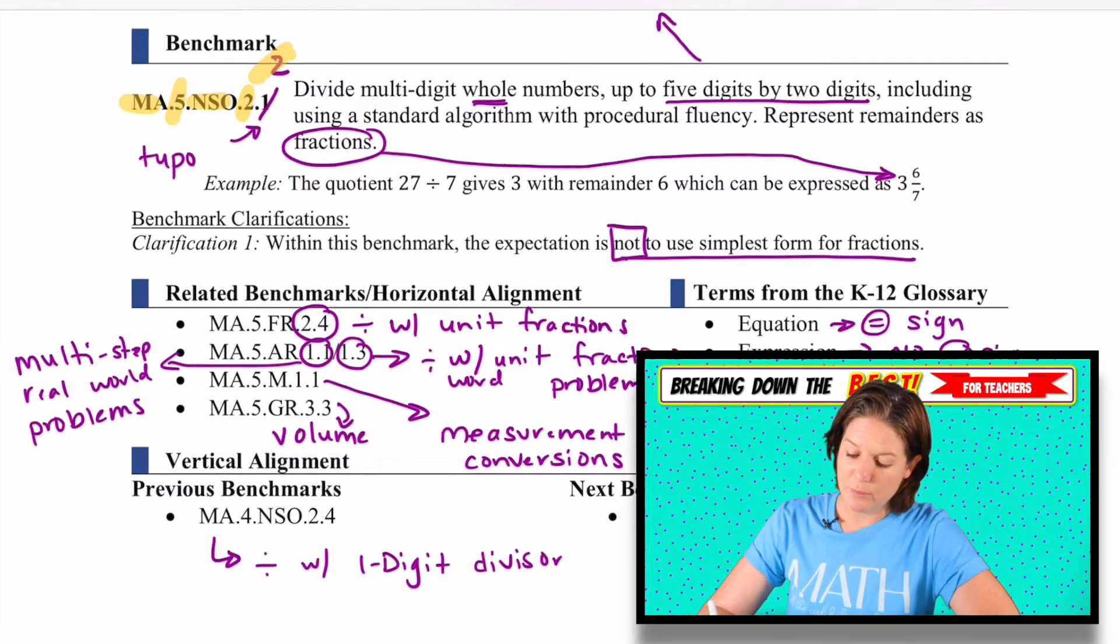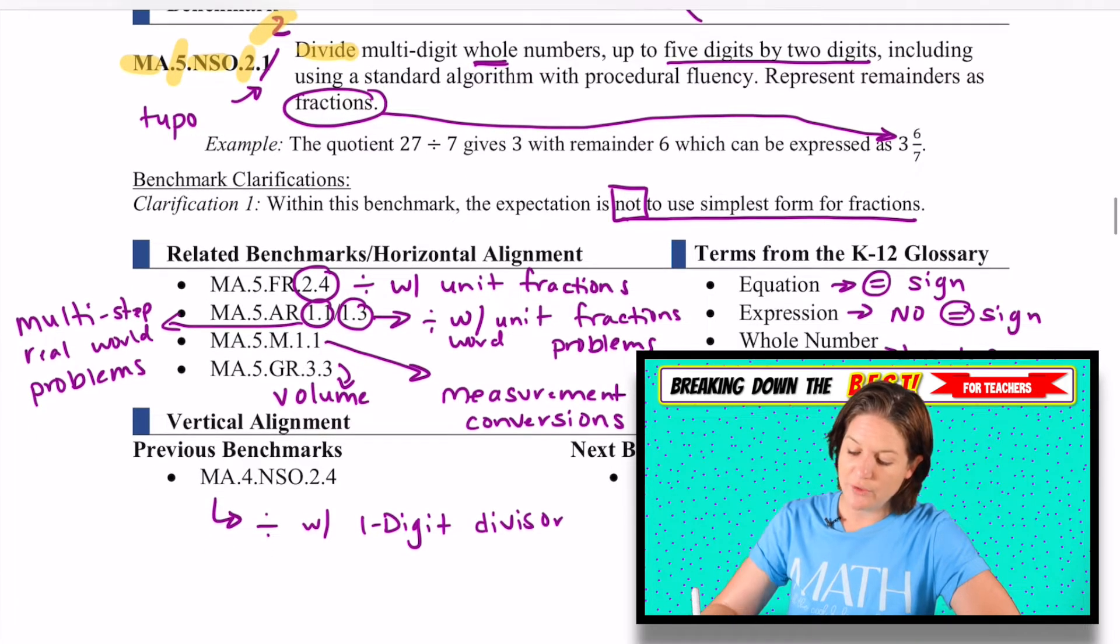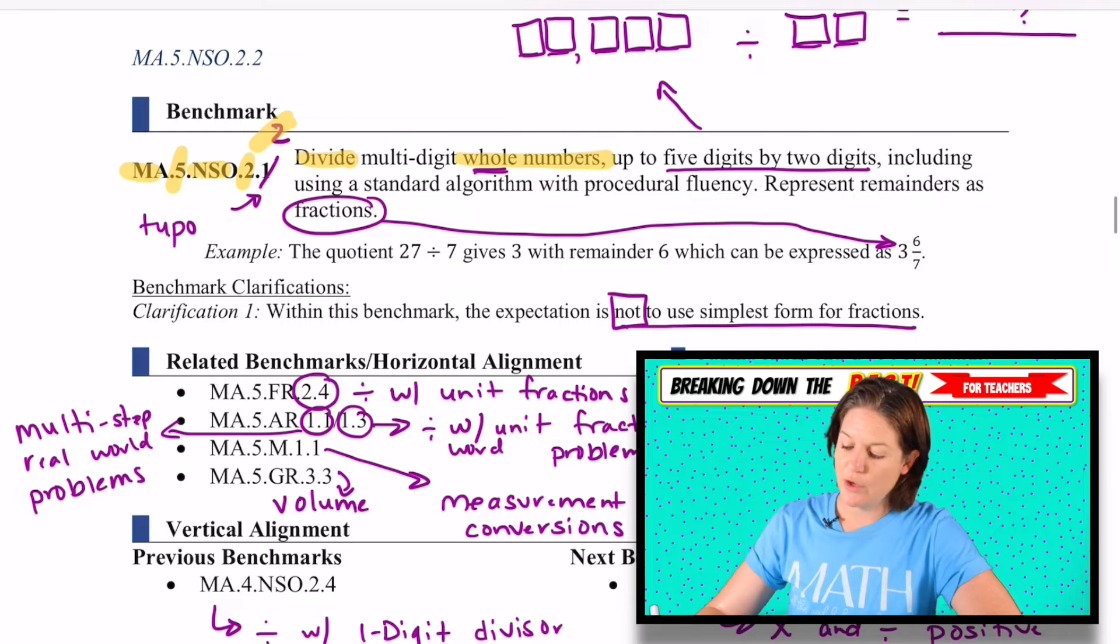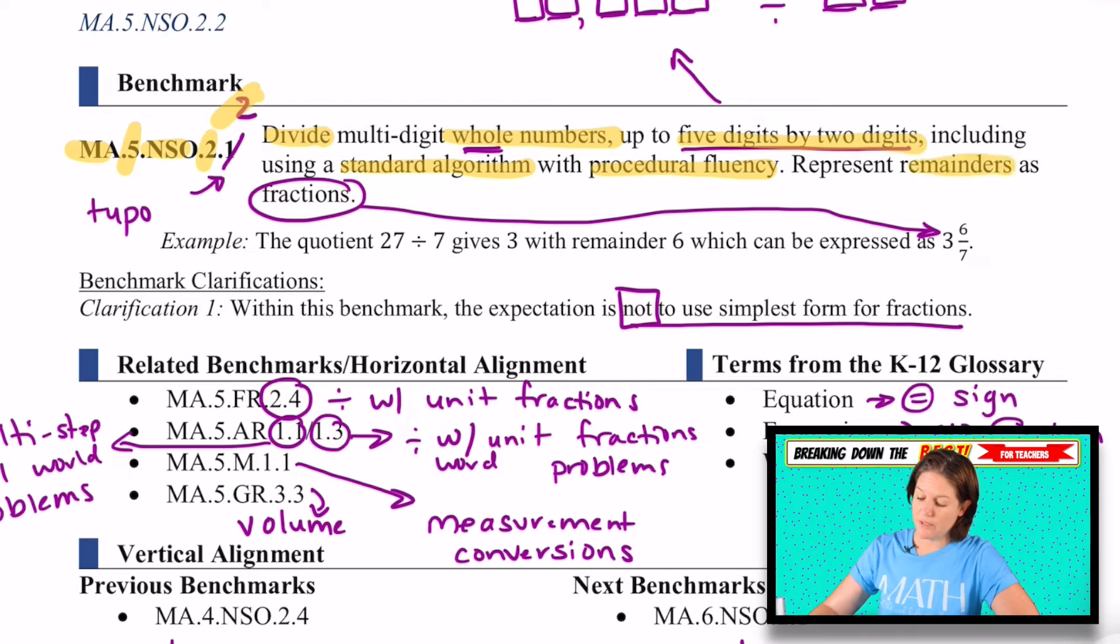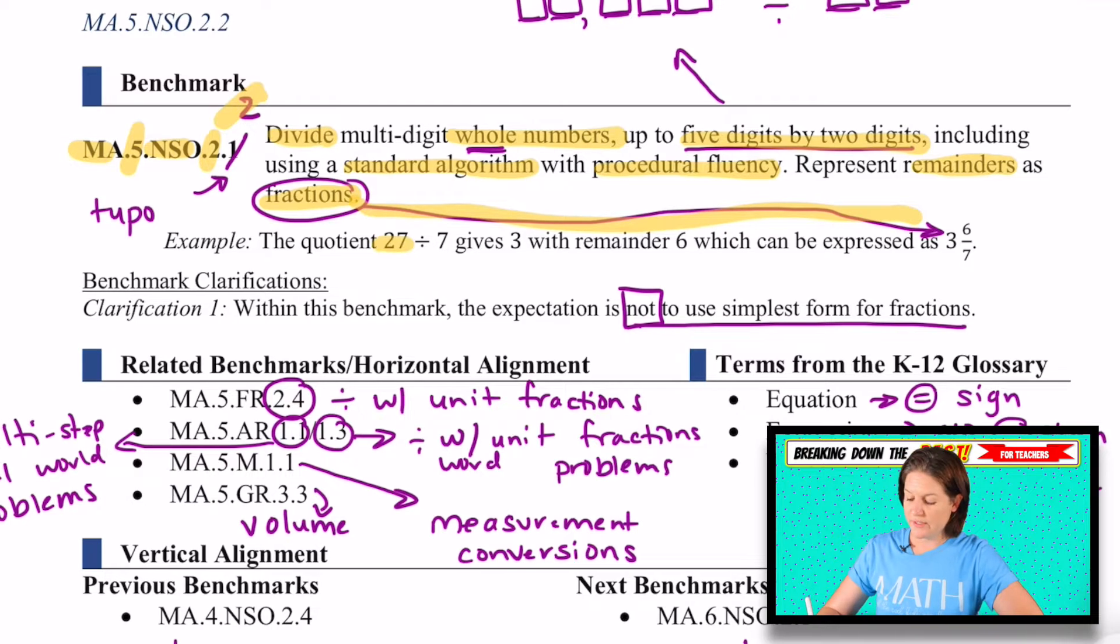So this says to divide. Today we will be dividing multi-digit whole numbers with up to five digits by two digits using a standard algorithm with procedural fluency. And then we must represent our remainders as fractions. So for instance, in this example, if we had 27, 27 divided by seven, that would give us a quotient of three with a remainder of six.